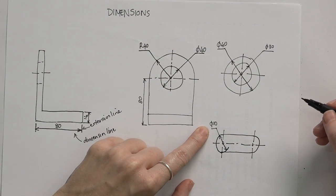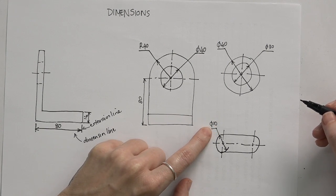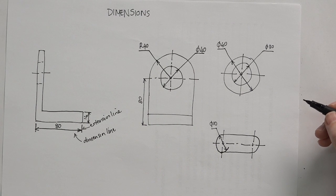This way when the workshop gets this drawing, it sees diameter 10 and it can immediately use the milling point that's diameter 10 to mill this shape.